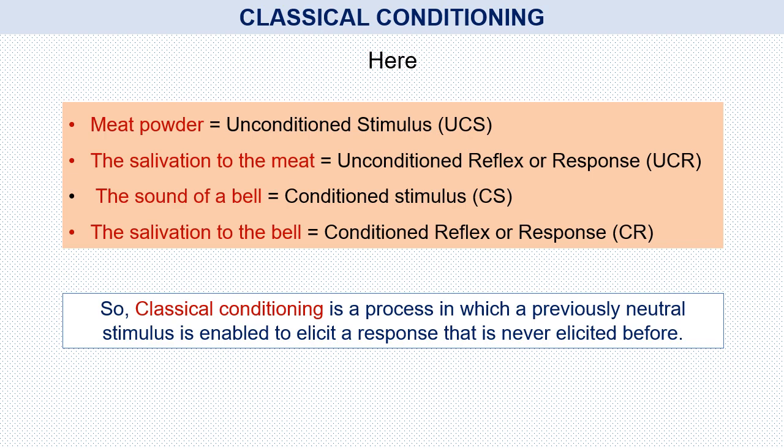Here, the meat powder — a natural food — is called the unconditioned stimulus. The salivation to the meat powder is called the unconditioned response or reflex. The sound of the bell, being artificial, is called the conditioned stimulus. The salivation in response to the bell, or conditioned stimulus, is called the conditioned response or reflex. So classical conditioning is a process in which a previously neutral stimulus is enabled to elicit a response that was never elicited before.